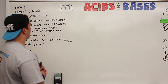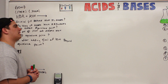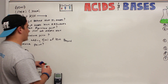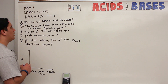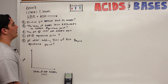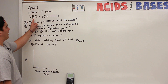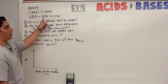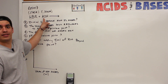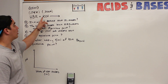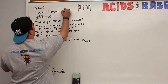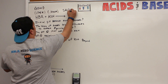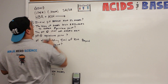All right Ninja Nerds, what we're going to do is go over some specific types of titrations. We'll talk about titration curves and the Henderson-Hasselbalch equation, which we haven't covered yet, but we're going to hit it in this video. The first thing we're going to do is react a strong acid with a strong base — so we're doing a strong acid/strong base titration.